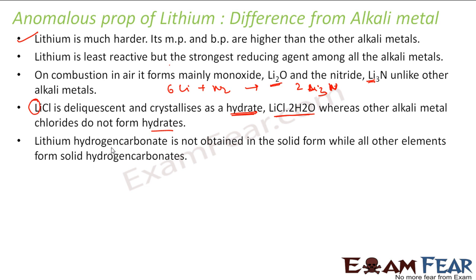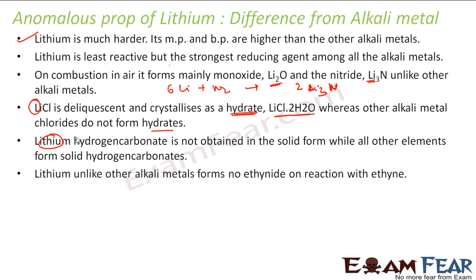Lithium hydrogen carbonate (LiHCO₃) is not obtained in solid form. But for other alkali metals it is obtained, because the lithium ion is small and the HCO₃⁻ ion is big, making it unstable. So it does not form in solid form. But for other elements like sodium and potassium, whose size is a little bigger, the hydrogen carbonates are a little more stable.